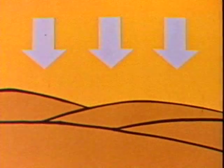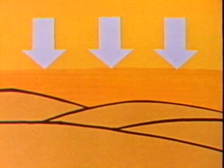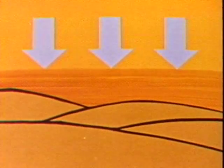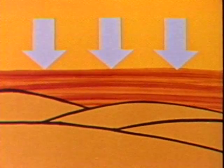Deserts, in general, are regions where the air is subsiding. As the air sinks, it moves to a level of higher pressure, which compresses the air. When air is compressed, it warms and its capacity to hold moisture increases.